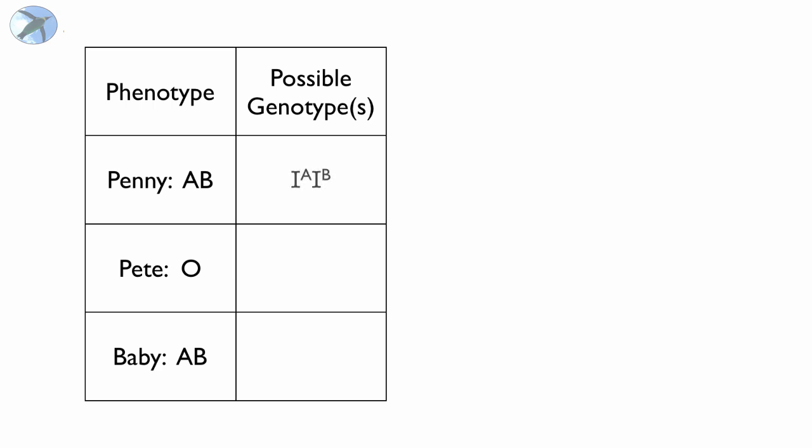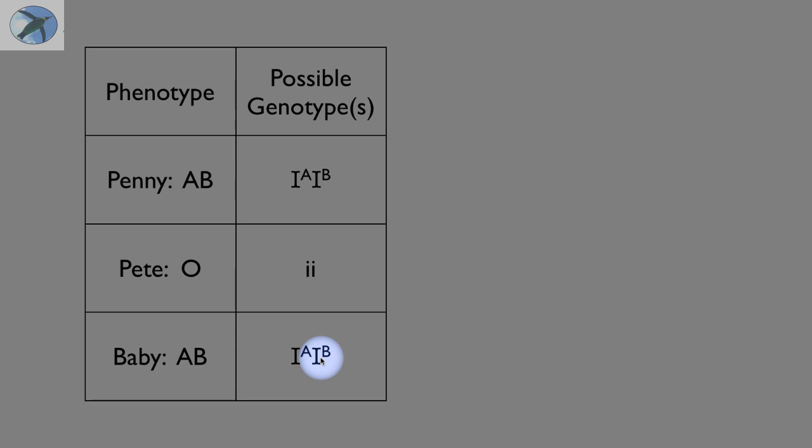If Penny is AB, there's only one genotype that'll give her that AB phenotype. So she has to be IA, IB. For Pete, also only one genotype for that O blood type. And the baby is IA, IB. Now, you can hopefully now look at this and see that the baby has to get one allele from each parent. So the mother could have given the baby either the A or the B, but that other allele had to come from someone else. It most certainly did not come from Pete. So he cannot be the father.